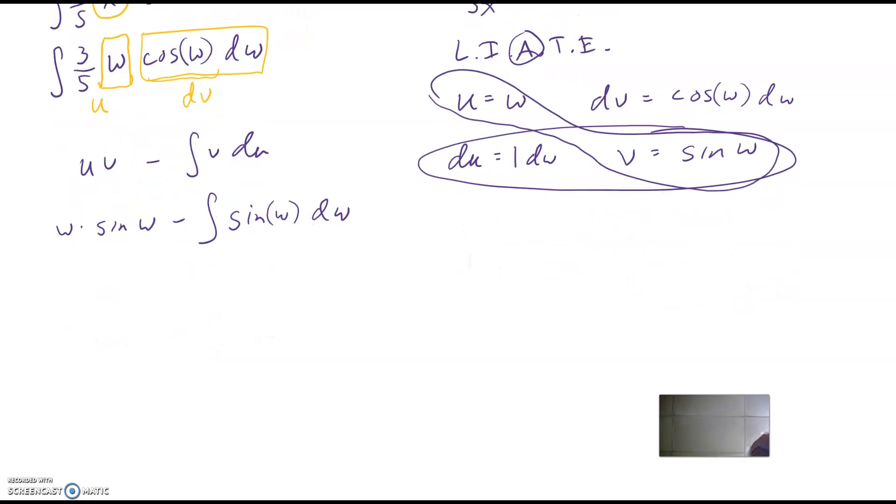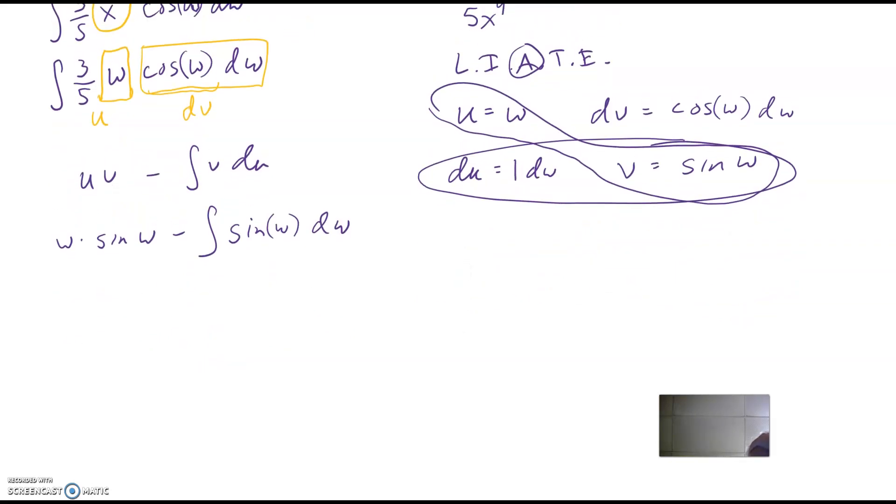Okay, now, okay, my w sine w, that's all good. Let's just recopy that down. Okay, now, the derivative, excuse me, the antiderivative of sine is negative cosine. So negative cosine of w, and then plus c. And then negative of negative is positive, so I've got w times sine w plus cosine w plus c.